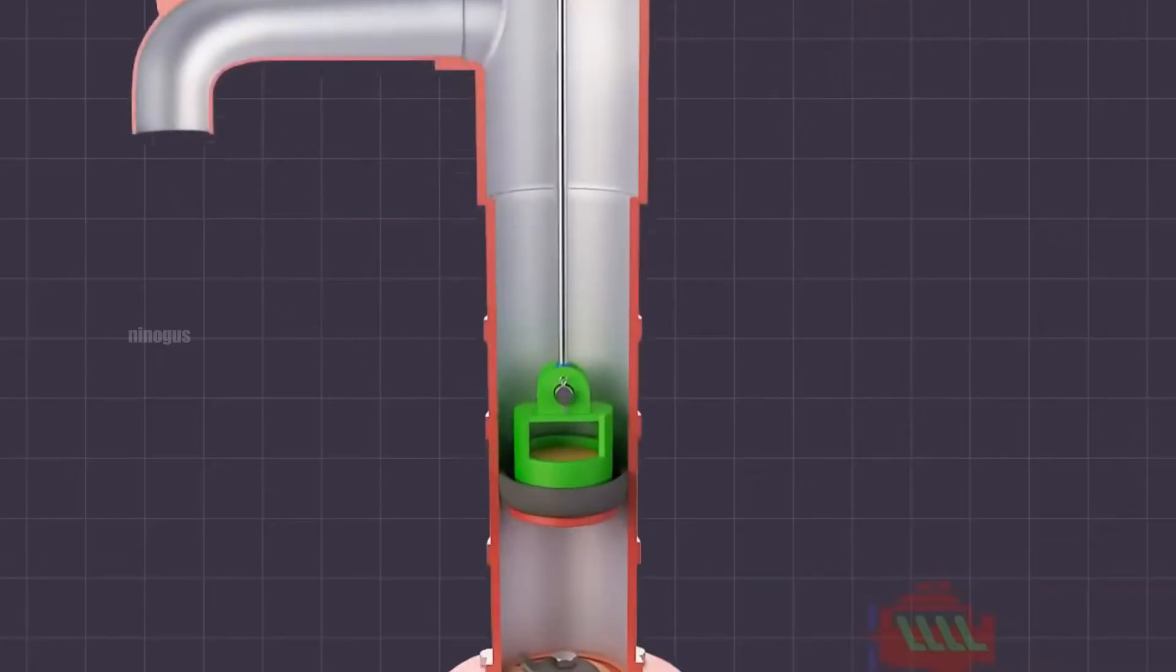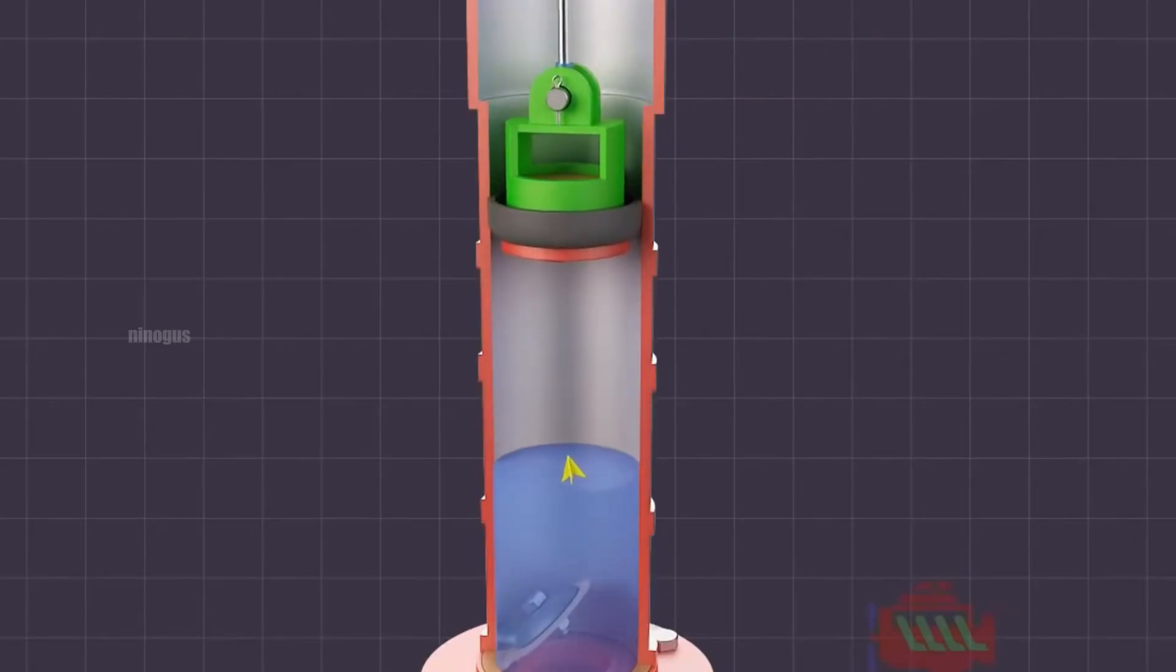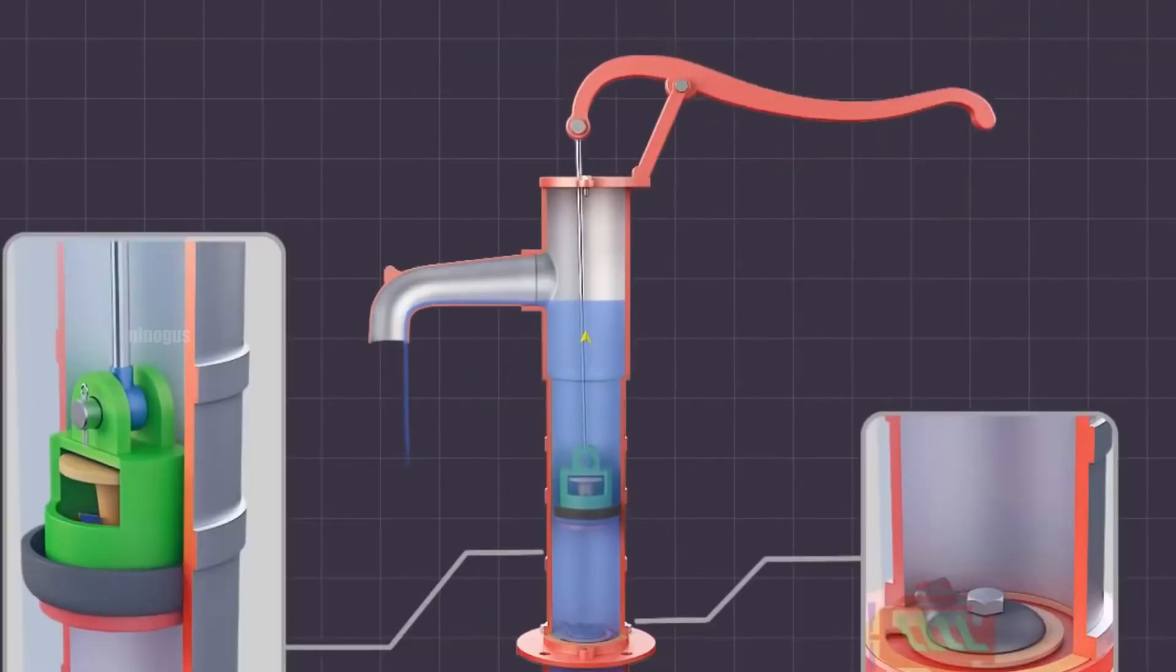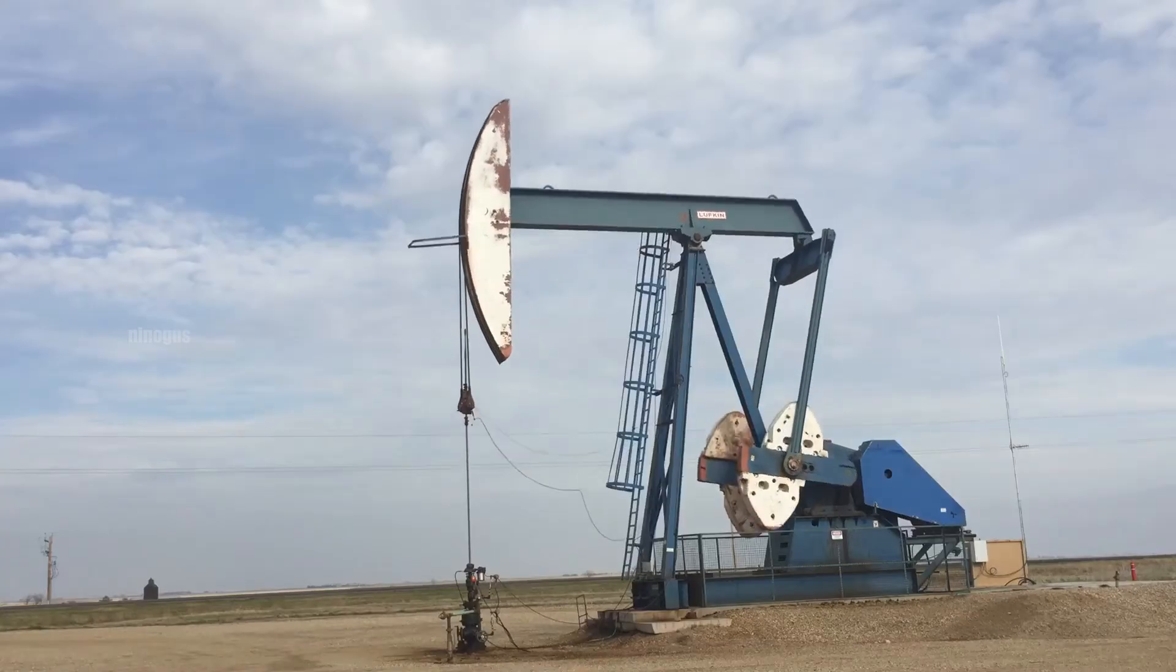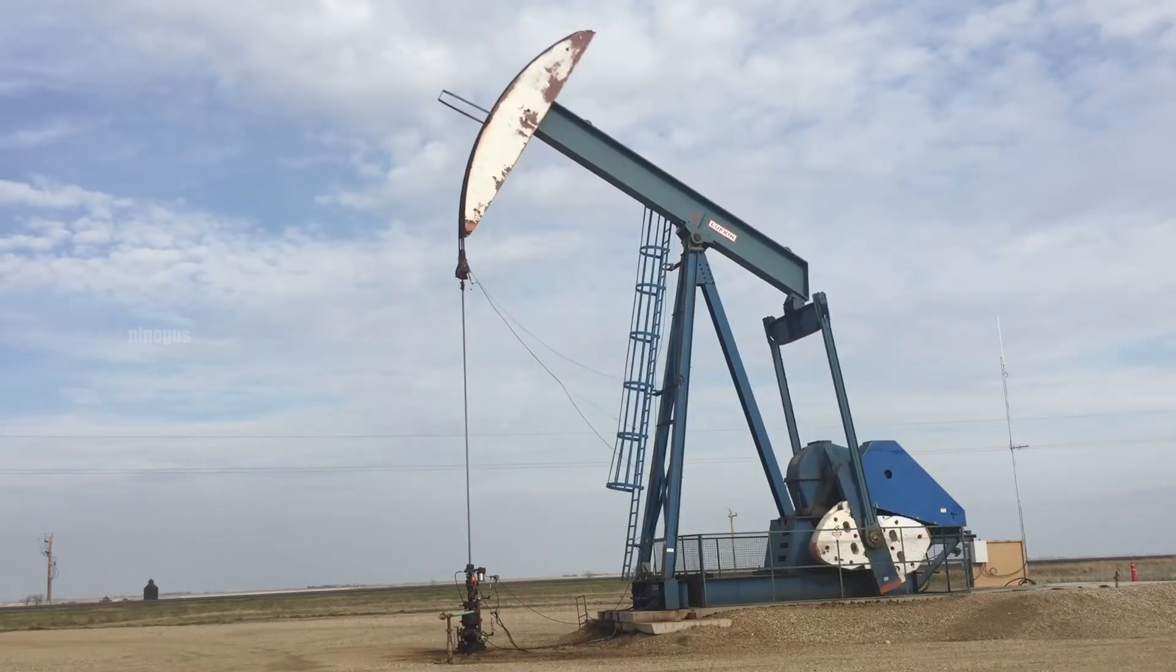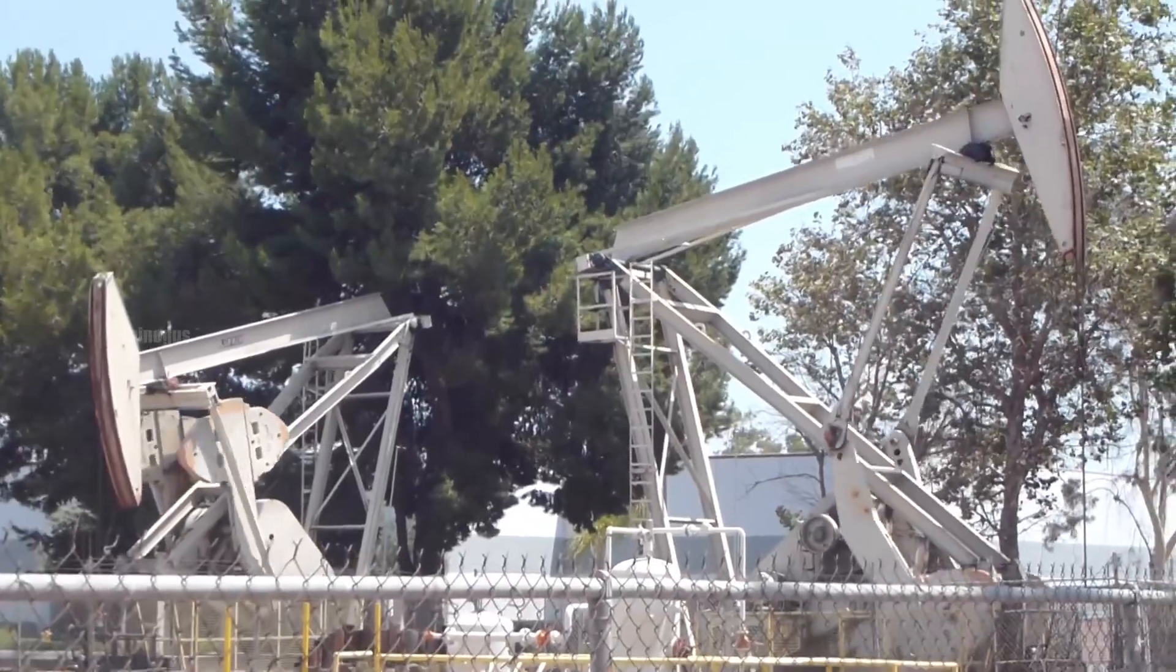The working principle is very similar to a manual water pump. However, in the case of the pump jack, the entire process is powered by electricity and is used to pump fluids from much greater depths.